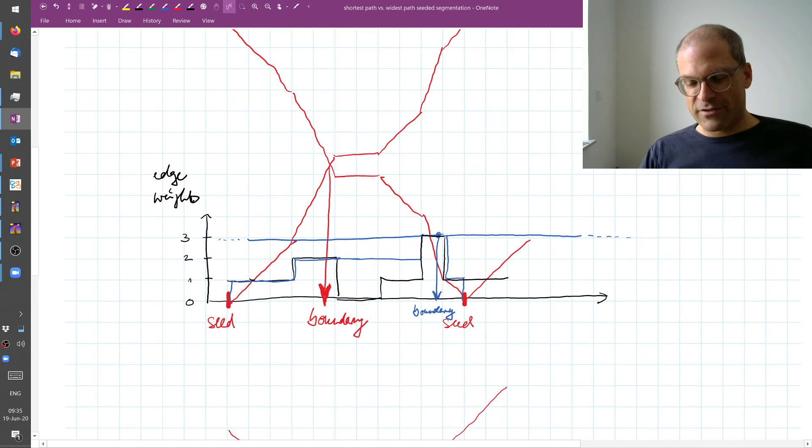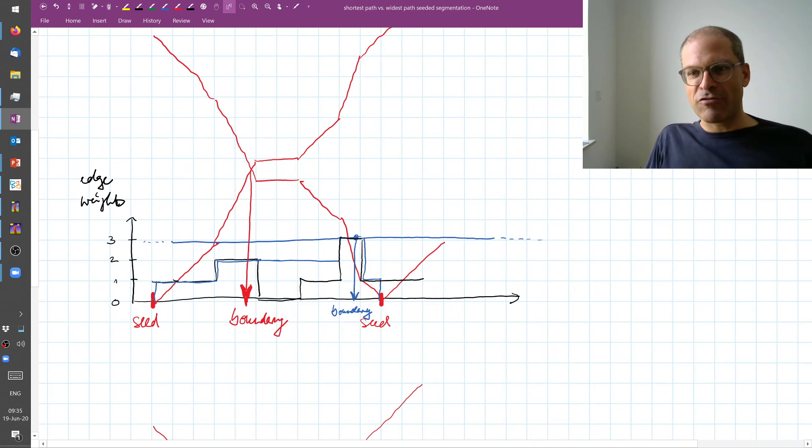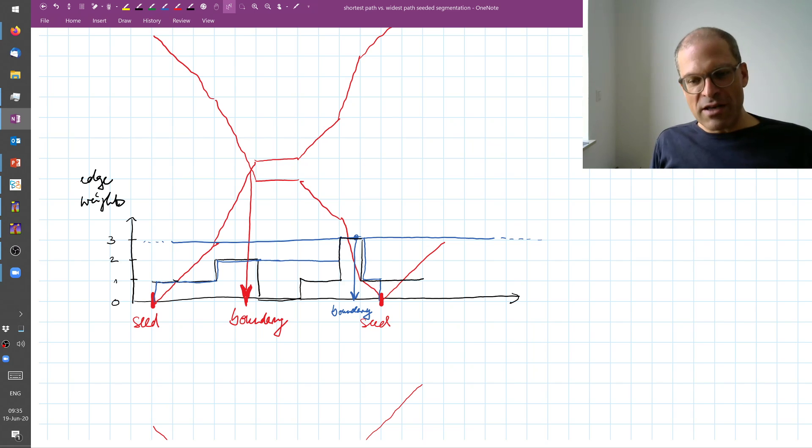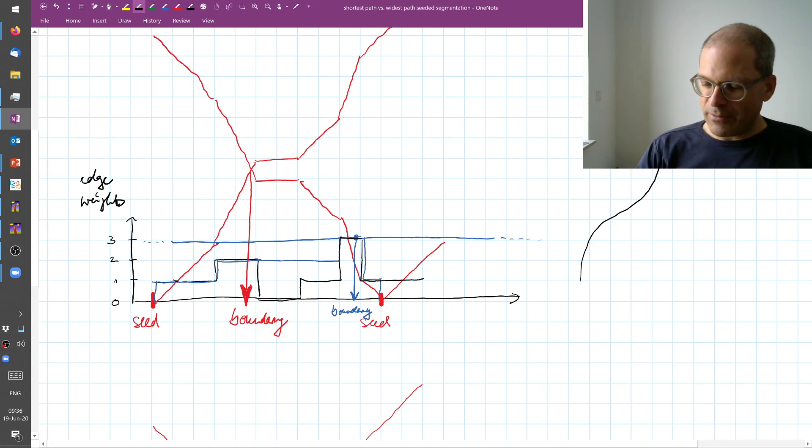So we notice that maybe unsurprisingly, if we use a different definition of shortest path, we will find different segments. And notice now that these have very different characteristics. So the minimax path only depends on the locally best or worst case that you come across, while the shortest path keeps adding up as you go.